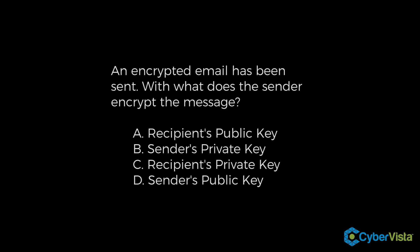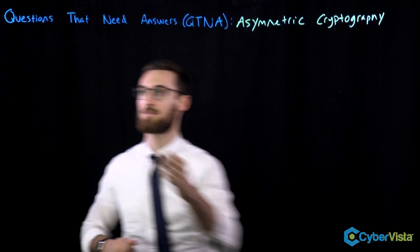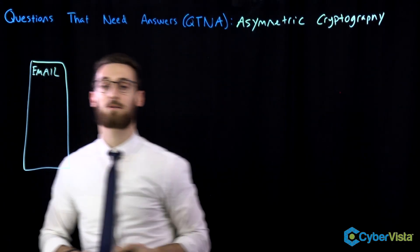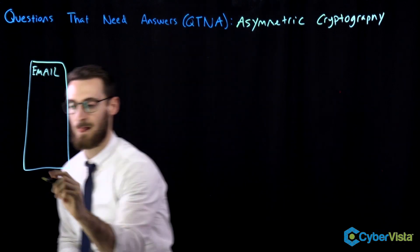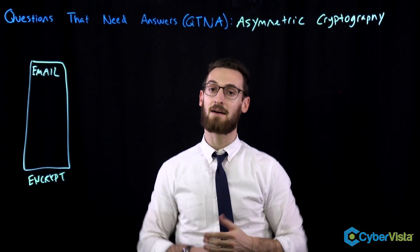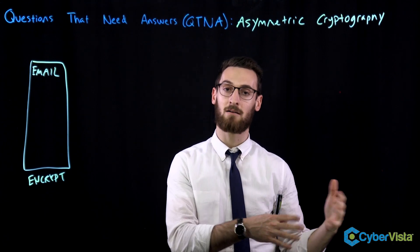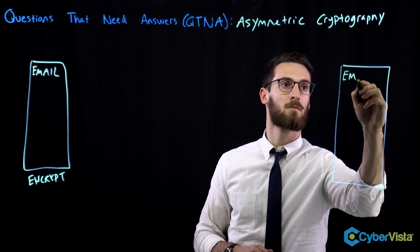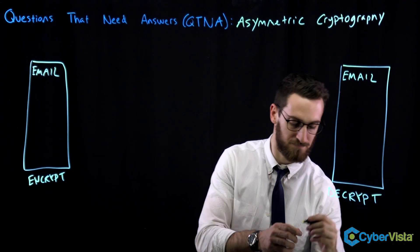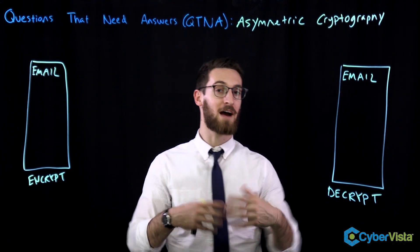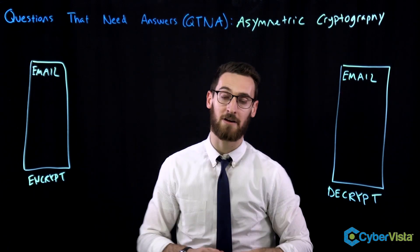All right, so let's just sort of recap the question here. All they're saying is we have an email and we need to encrypt that email. We want to send it to somebody and have that same email be decrypted and read by the other party. In order to get this question right, you have to understand asymmetric cryptography.